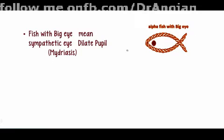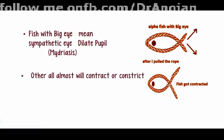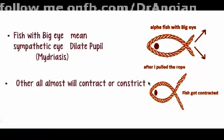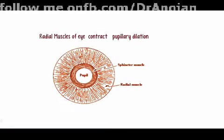If I pull these two strings towards the eye, this results in contraction of the fish. Almost all effects produced by activation of alpha receptors involve contraction or constriction. For the eye, this is contraction of the radial muscles of the eye, which results in pupillary dilation.